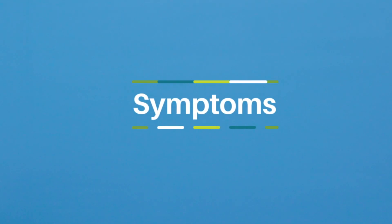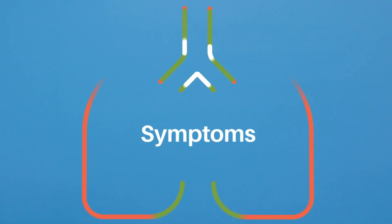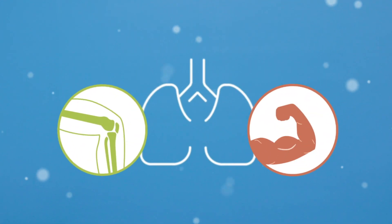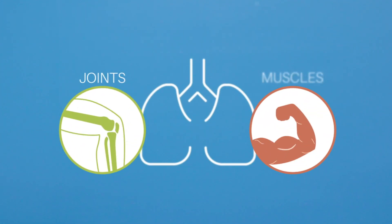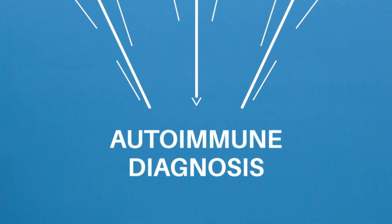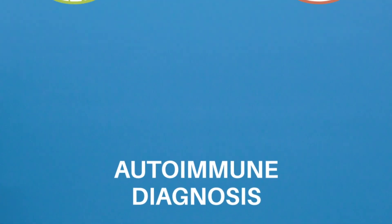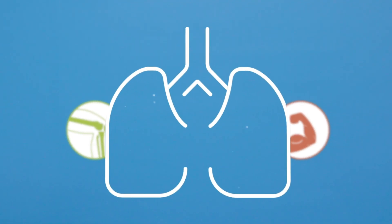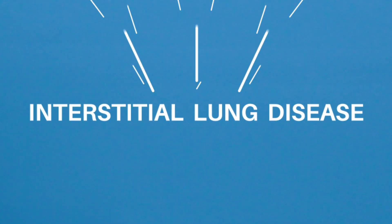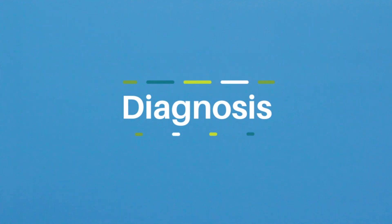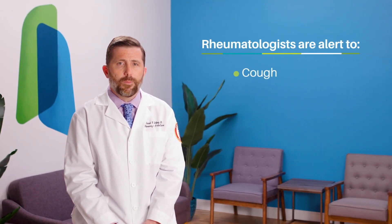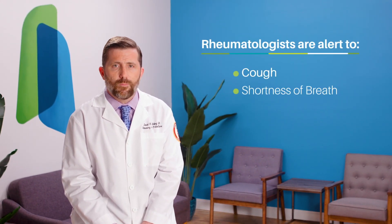Some patients with autoimmune-related interstitial lung disease first develop signs and symptoms outside the lungs, such as in the joints or muscles. The evaluation of these signs and symptoms leads to the autoimmune diagnosis. Other patients may present with pulmonary symptoms first and will likely be diagnosed with interstitial lung disease by a pulmonologist. In patients with known autoimmune diseases, lung disease can develop later, so a rheumatologist will be alert to pulmonary symptoms such as cough or shortness of breath.